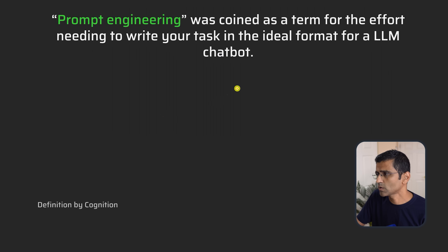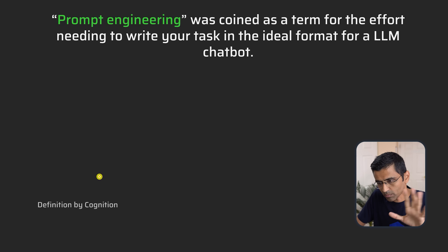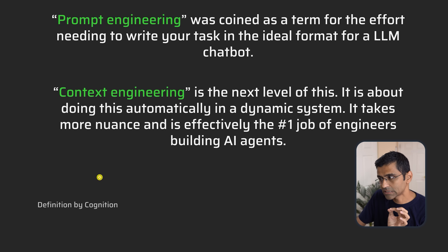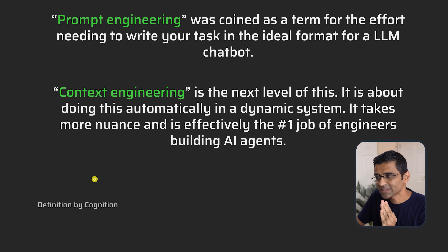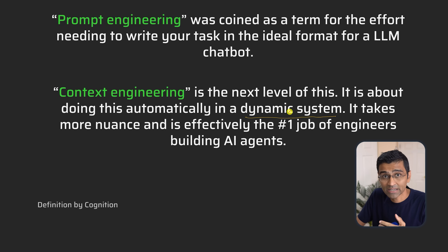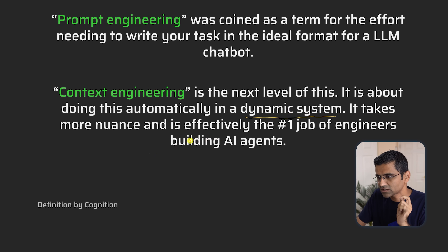As per Cognition, prompt engineering was coined as a term for the effort of writing your task in the ideal format for an LLM chatbot — writing a good prompt sufficient for that narrow task. Whereas context engineering is the next level: it's an evolution of prompt engineering. It is about doing this automatically in a dynamic system — your agent — where it's producing that context across turns and you are not writing it manually. It takes more nuances and is effectively the number one job for AI agent engineers.